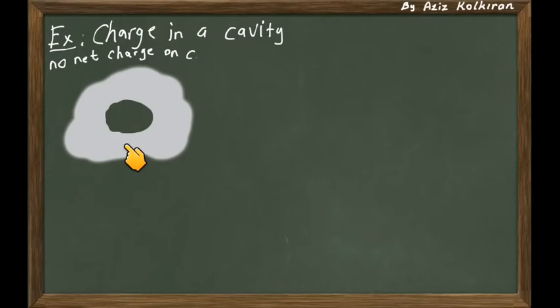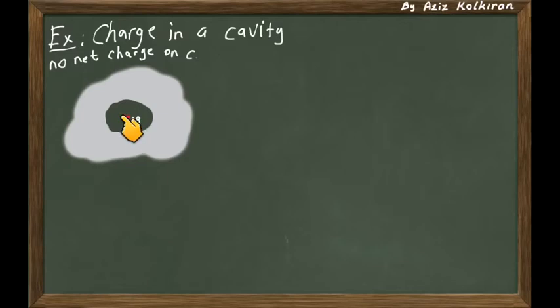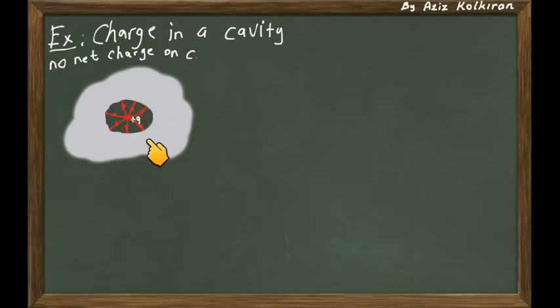Suppose we have a conductor which has a cavity inside — this empty space — and suppose the conductor has no extra charge on it. We put a charge +Q into this cavity somewhere, and the charge is not touching the inner surface. Because of the point charge, electric field lines will emerge from the plus charge and they will end on the inner surface normally, in a perpendicular direction, for reasons discussed earlier.